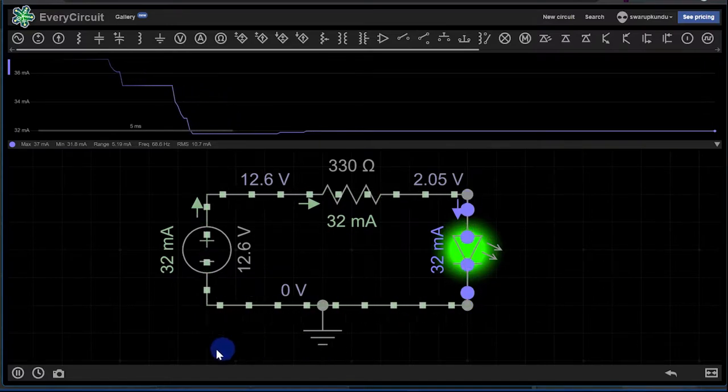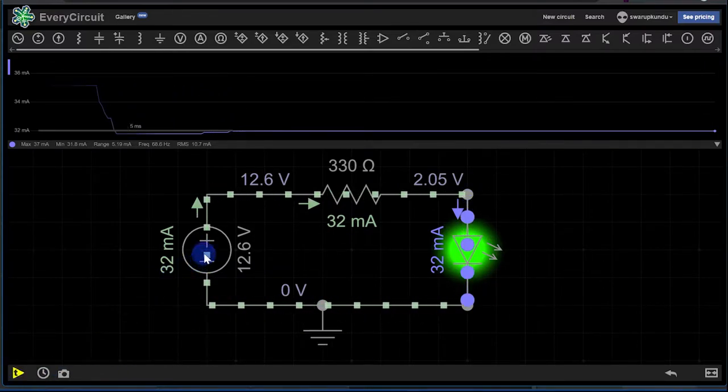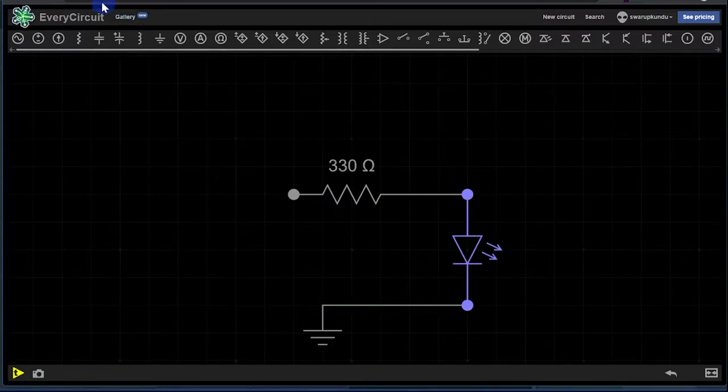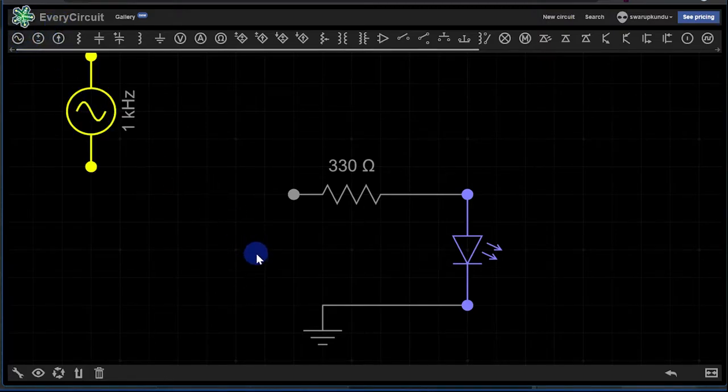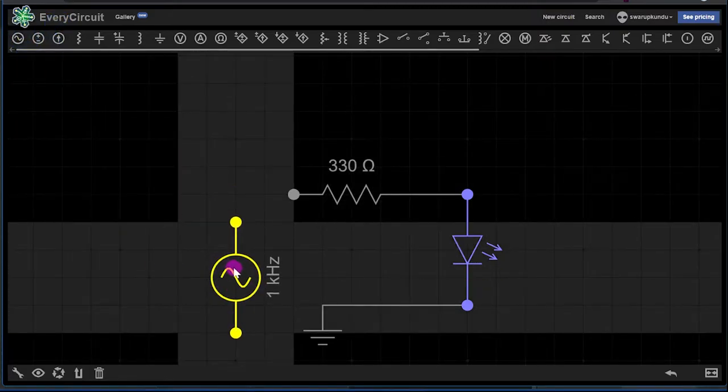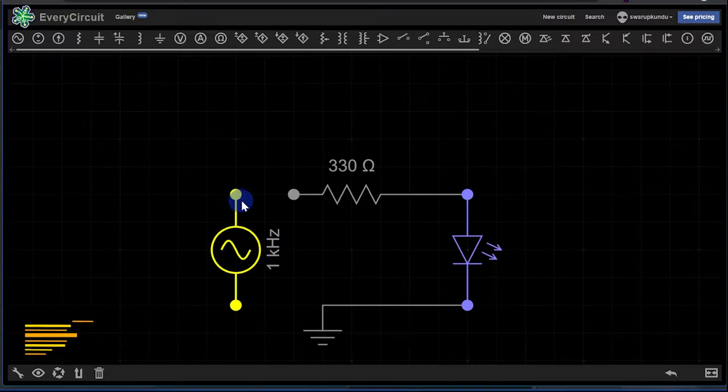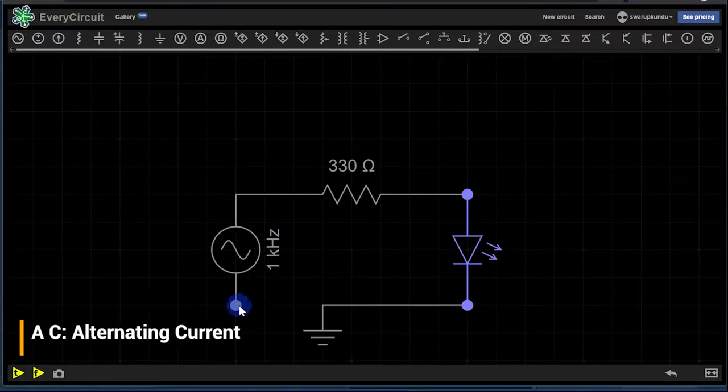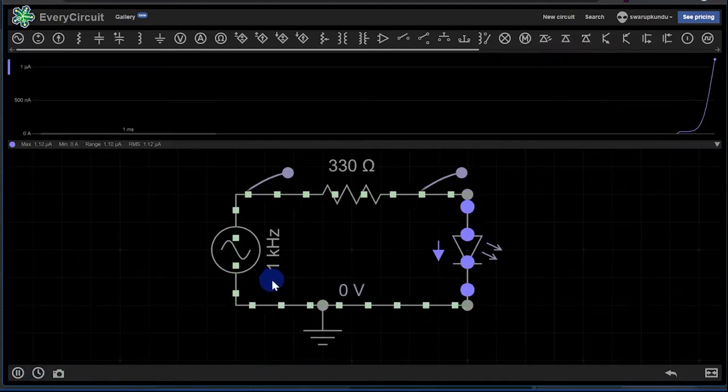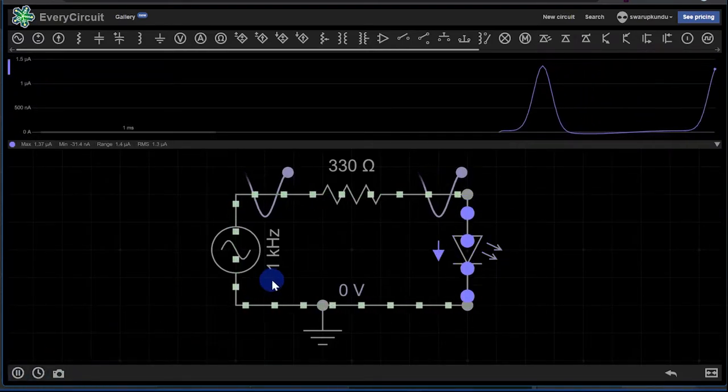This is a typical 12.6 volt setup. Now let's replace it with an AC source. I'm placing the AC source here and let's reconnect the circuit wire. Let's run it.